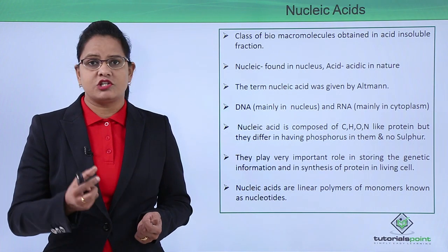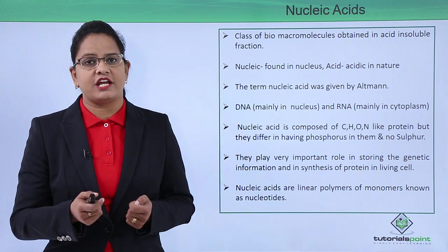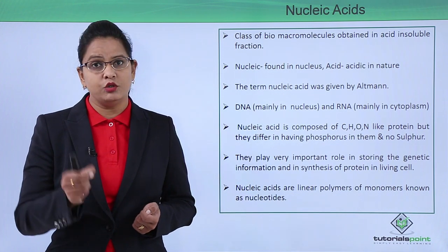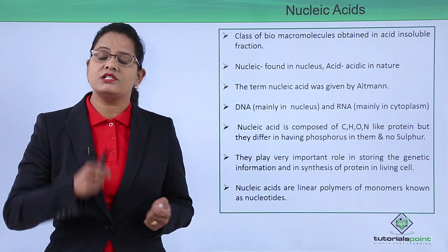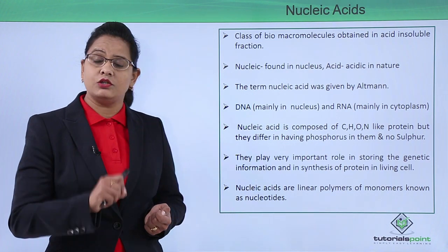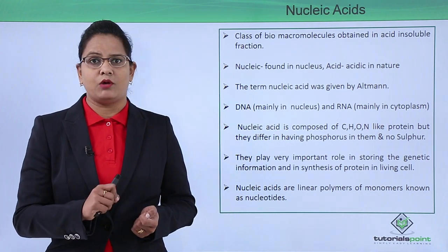Frederick Mischer was one scientist who first isolated something like nucleic acid from the pus cells, which he thought was responsible for transferring genetic information from one generation to another, and he called it nuclein. This nuclein was later recognized as nucleic acid.